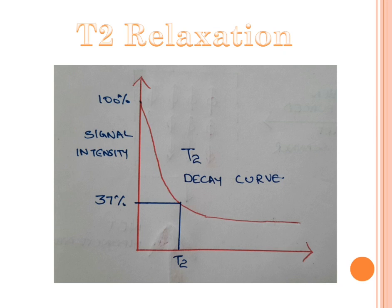T1 relaxation and T2 relaxation are used for producing MRI images. Different tissues have different T1 and T2 relaxation times, and based on these differences we get different signals, which allows us to distinguish between tissues in MRI.